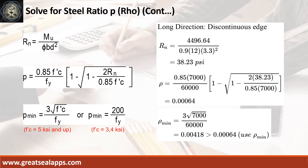Long direction discontinuous edge moment equals 4,496.64 inch-pounds. Resistance factor equals 0.9, b equals 12 inches, and d equals 3.3 inches. The beam design ratio R_N equals 38.23 PSI, and reinforcement ratio rho equals 0.00064. Use rho minimum of 0.00418.